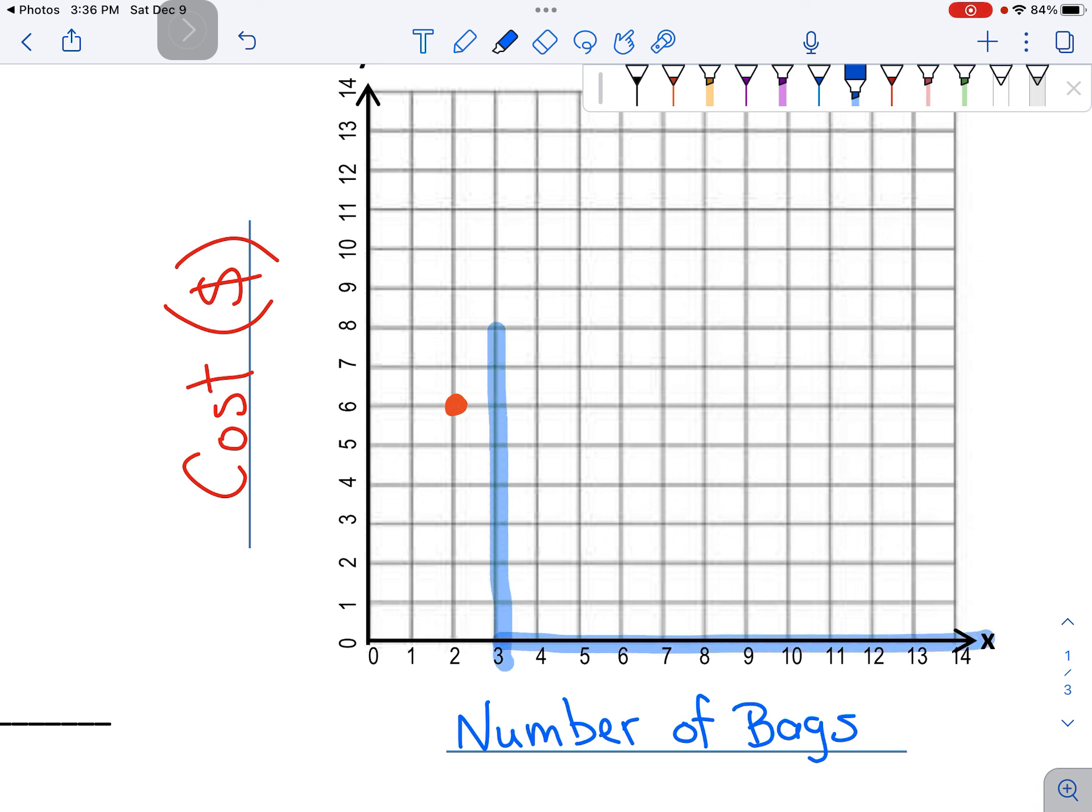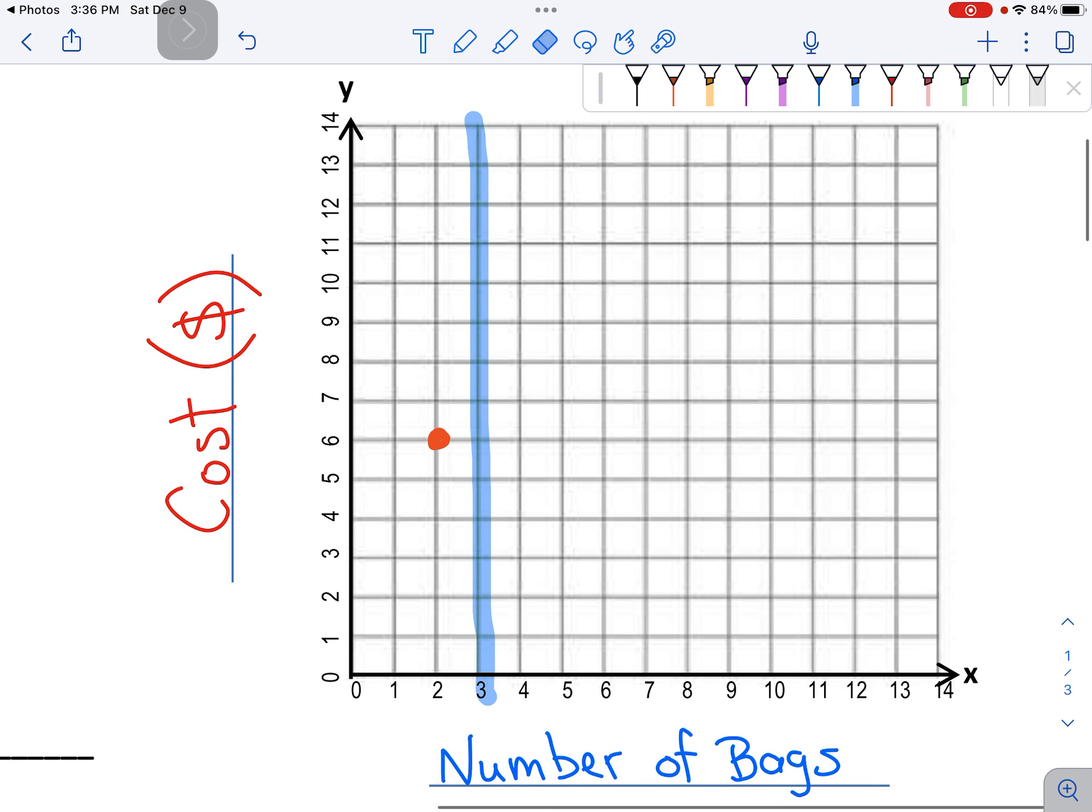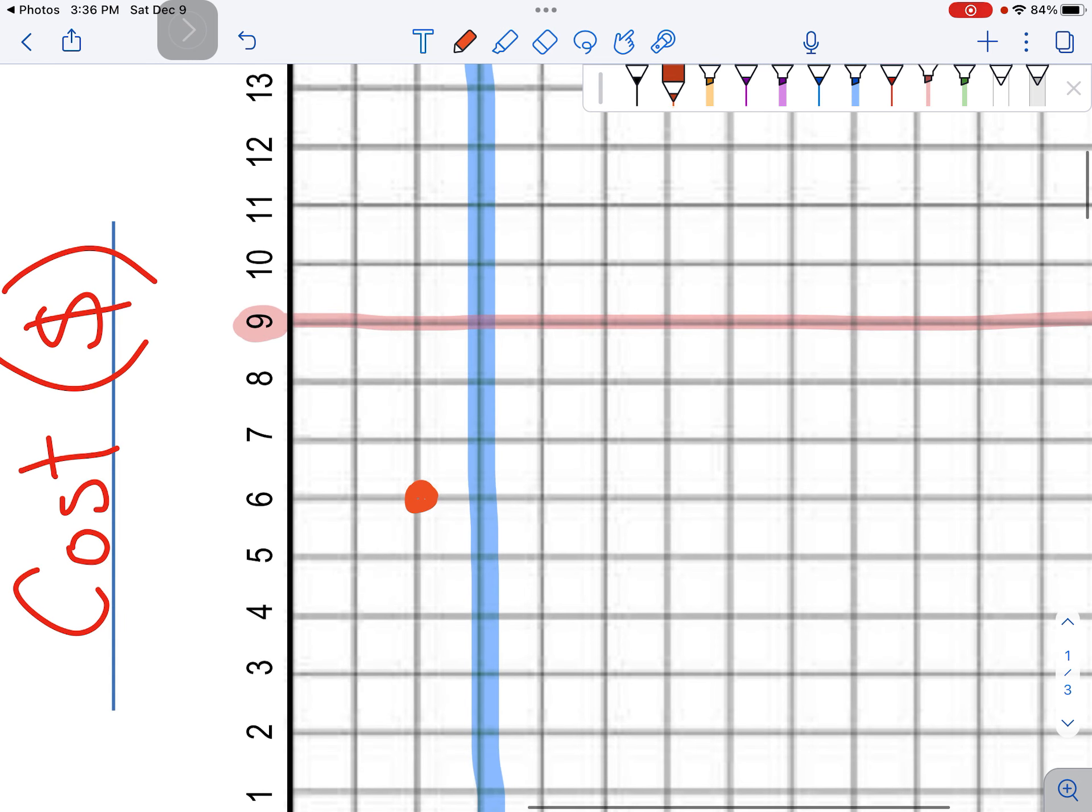And the y line, I remember, was nine. Three bags cost nine dollars. So I'll find the nine and go across. And where those lines connect, I'll put my next dot.